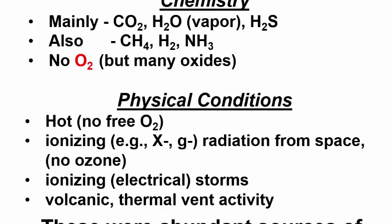The physical conditions predicted by Oparin and Haldane were, to say the least, hellish. It was hot. Without oxygen there could be no ozone layer to absorb ionizing radiation like X-rays and gamma rays, which could reach the Earth's surface in abundance. There would have been ionizing electrical storms, lots of volcanic activity, and under the oceans as they were forming, thermal vent activity. These were abundant sources of free energy.